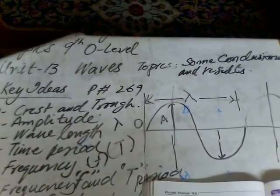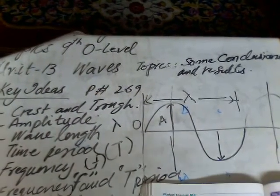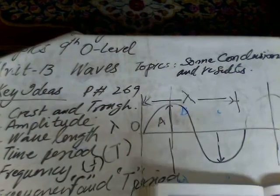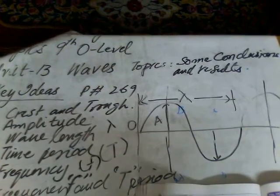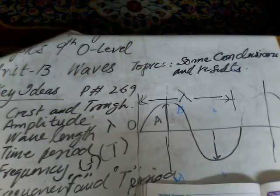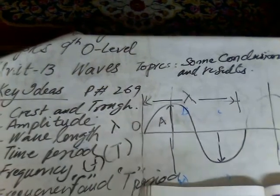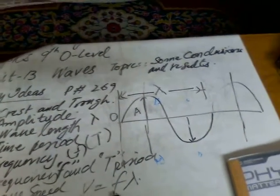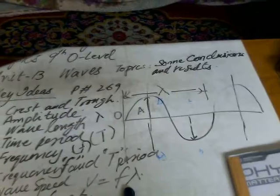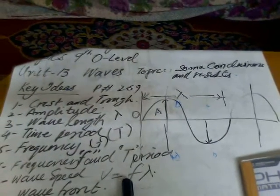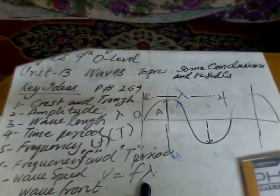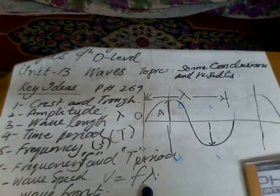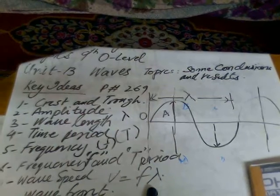Next is the wave speed, represented by v. Distance traveled by the wave per second. Its SI unit is also meter. Wave speed v is equal to the distance covered by the wave in one second.